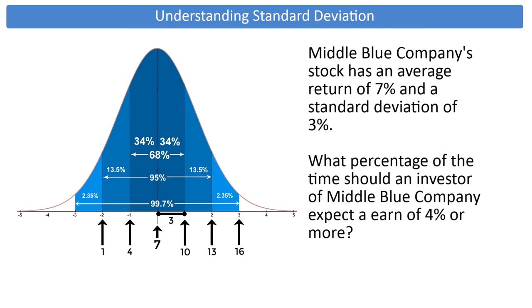This means you total the areas above minus one standard deviation: 34 plus 34 plus 13.5 plus 2.35 equals 83.85, which can be rounded to 84%. This is the final answer.